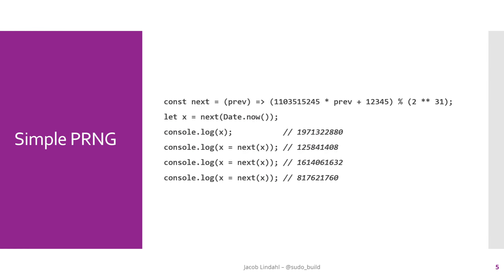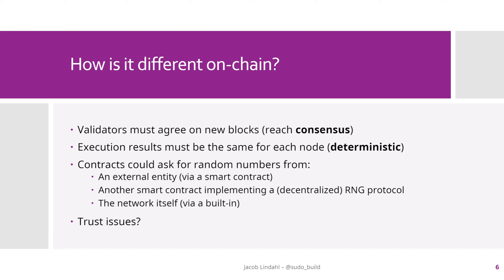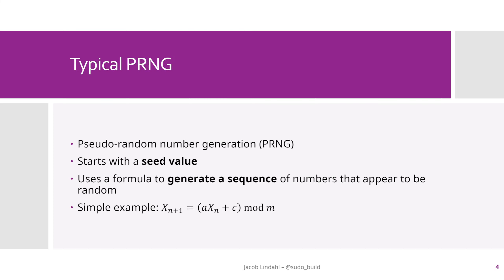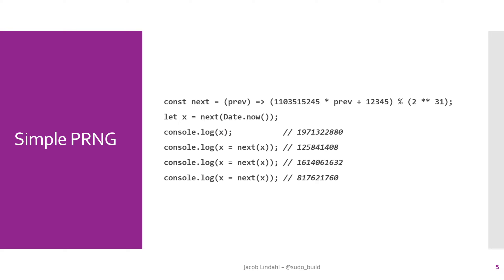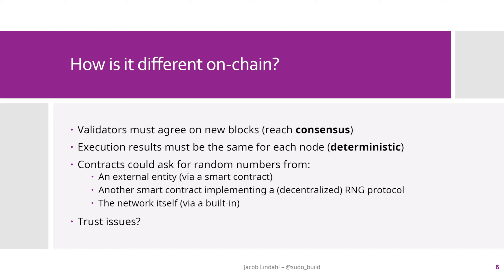Here's an example of what a PRNG might look like implemented in JavaScript. It's very simple — I chose a factor, a constant, and a modulus, then seeded the generator with the current time in milliseconds. Each time I want a new random number, I call the next function with the previous random number, and it spits out a random enough number. But on the blockchain this doesn't work, because one of our requirements is that it has to be unpredictable — and this algorithm is extremely predictable. So that's not a good solution for on-chain use.